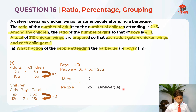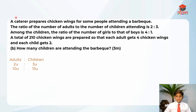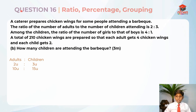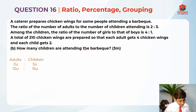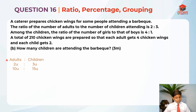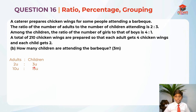I hope you understand my explanation for part A. Let's move on to part B. How many children are attending the barbecue? They're asking for the total children. This was our before ratio — adults is to children. We need to know how many children are attending the barbecue. There are 15 units of children, but we don't really know the actual number.